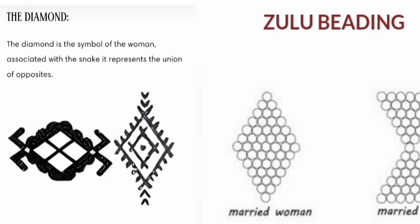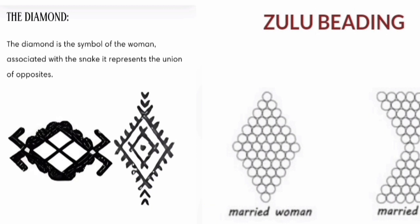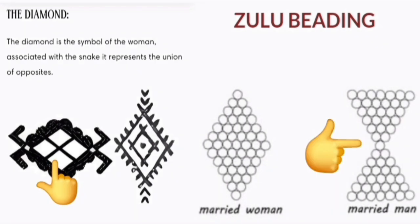Comparing the two: the Amazigh diamond shape is a symbol of a woman associated with a snake, representing the union of opposites — in other words, this diamond represents marriage. And in the Zulu beading, this diamond also represents marriage. You can see these are two triangles touching at the base, meaning if they touch at the base, that's a married woman. But if they touch from the two tips, that's a married man. It's the same symbol, just adjusted so you can tell if it's male or female. Even in the Amazigh version, you can tell because of the touching.